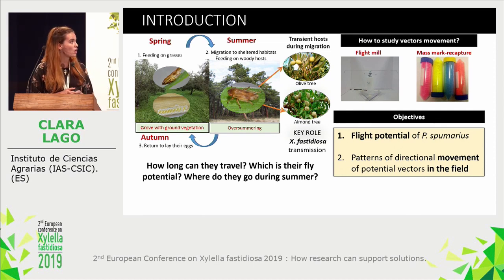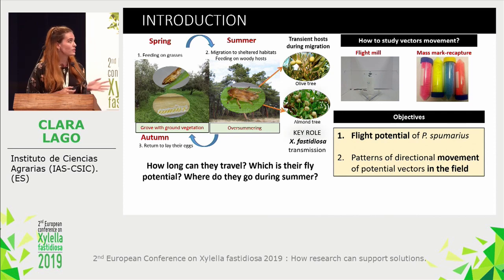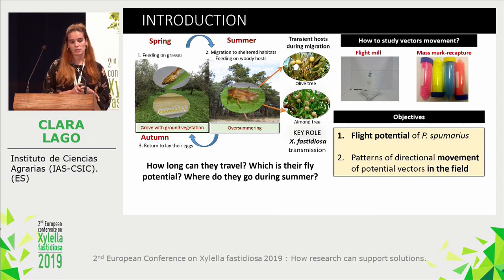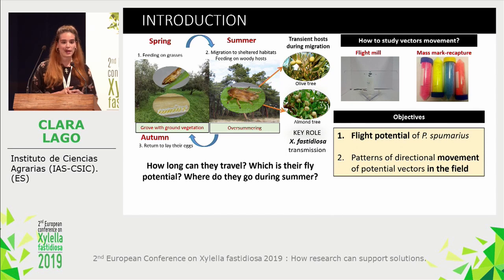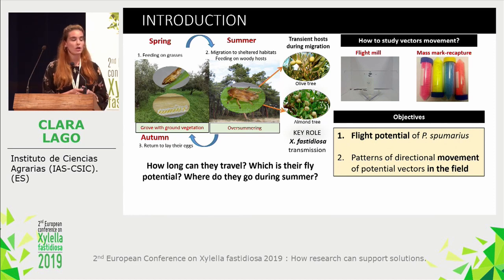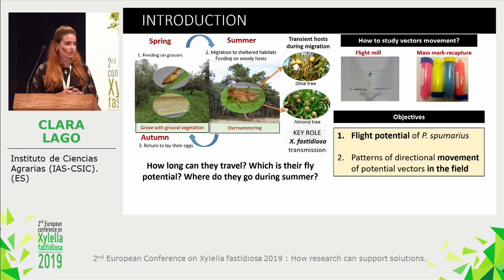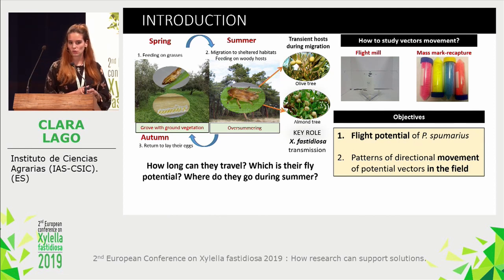Such hosts as olive trees or almond trees act only as transient hosts for these spittlebugs. However, it is thought that Neophilaenus campestris and Philaenus spumarius may play a key role in Xylella fastidiosa transmission when they migrate to these habitats during summer, or in autumn when they return to crops. So how far can they travel, what is their flight potential, and where do they go during summer? All these questions need to be answered. Combining techniques such as rotational flight mills in the laboratory or performing field assays using mark-recapture techniques can improve our knowledge.